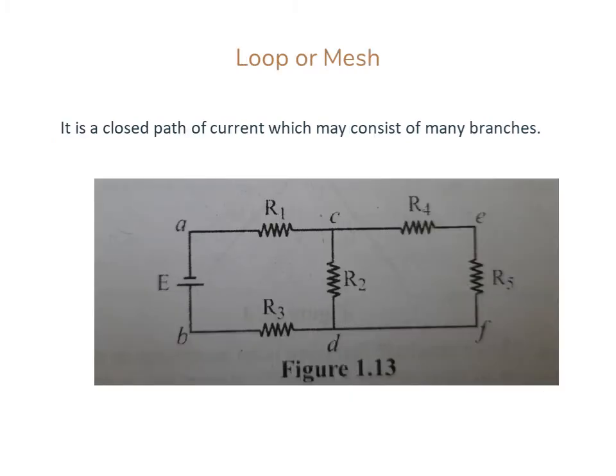Loop and Mesh: A loop is a closed path of current which may consist of many branches. For example, in the diagram, A, C, D, B, A is a loop.